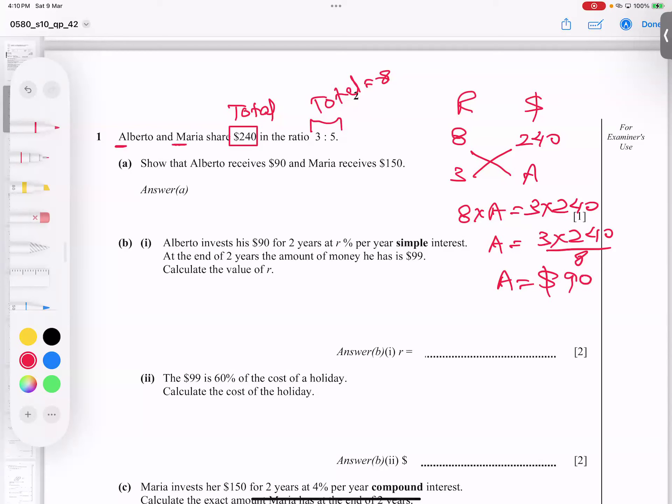Now for Maria, how do you get Maria? Simple way to do it: from total money subtract 90. No need for the whole working. We can save our time. 240 minus 90, Alhamdulillah, $150 is my answer. So I believe all of you understood well.